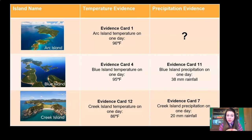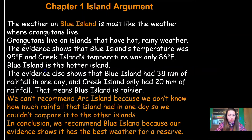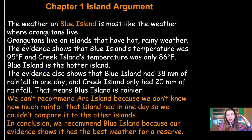We also need to prove to the Wildlife Protection Organization that we reviewed all three islands and did our best to compare. So we need an explanation for why we didn't select Arc Island. We didn't have enough evidence because we didn't have a precipitation reading for how much rainfall fell in one day. So we add: we can't recommend Arc Island because we don't know how much rainfall that island had in one day, so we couldn't compare it to the other islands. Then in conclusion, we recommend Blue Island because our evidence shows it has the best weather for a reserve. I also added a conclusion to wrap it up, because when we write, we always want a conclusion that restates our claim.